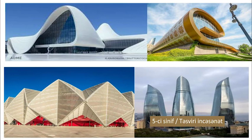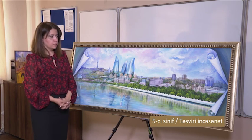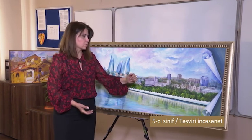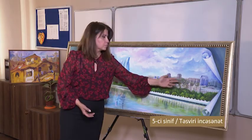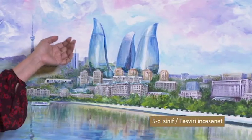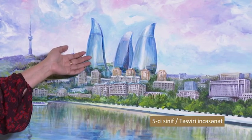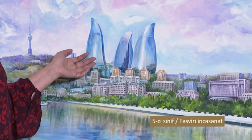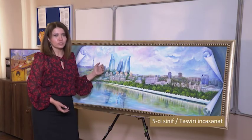Dünyaca məşhur Heydər Əliyev Mərkəzi dünyada az tanınmış memar Zaha Hədid tərəfindən layihələndirilib. Xalça muzeyi öz qeyri-adi üslubu ilə fərqlənir. Crystal Hall və Alov Qüllələrini misal çəkə bilərik. Alov Qüllələri artıq şəhrimizin simvoluna çevrilib - onu bütün dünyada tanıyırlar. Mən öz çəkdiyim bir rəsmi sizə göstərmək istəyirəm - bu rəsimdə müasir Bakı təsvir edilib. Burada Qız qalası, Sovet dövrü binaları və Alov Qüllələri görsənir. Bugün biz sizinlə Alov Qüllələrinin şəklini çəkəcəyik.